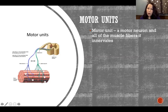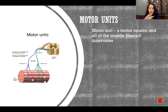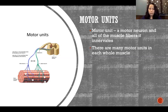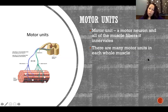So motor units. A motor unit is a motor neuron and all of the fibers that it innervates. Every motor neuron supplies a variable number — usually many — muscle fibers, and every muscle fiber is supplied by only one motor neuron. So it's one motor neuron to some number of fibers. There are many motor units in each whole muscle.